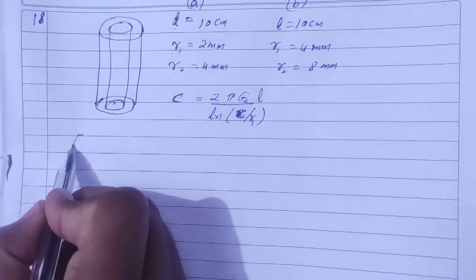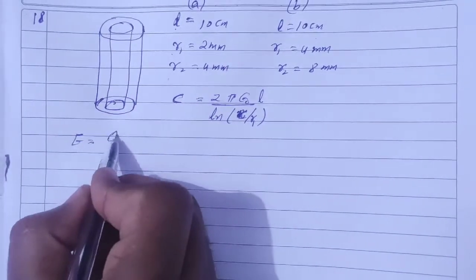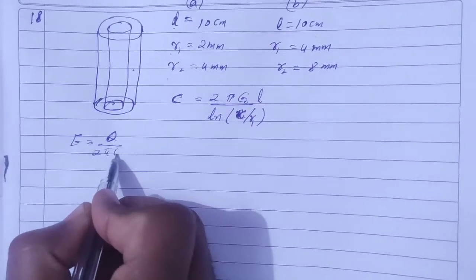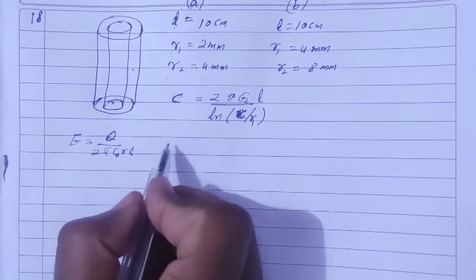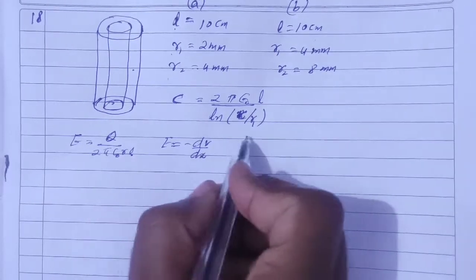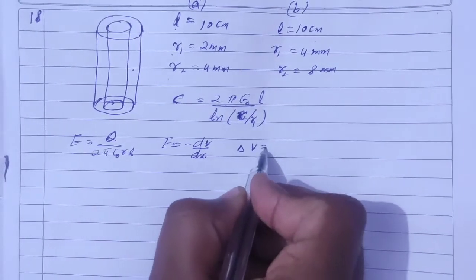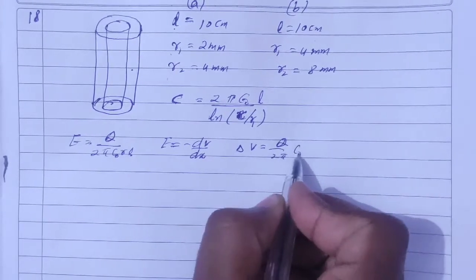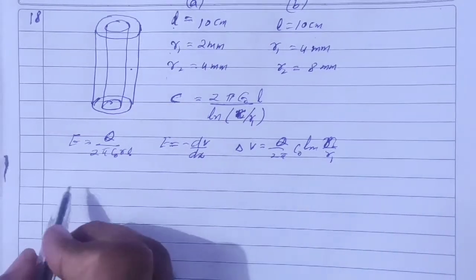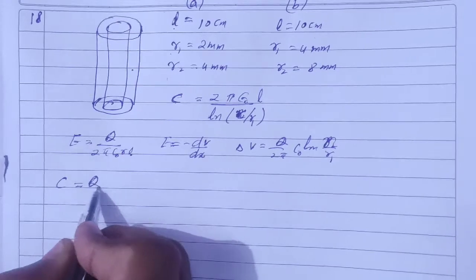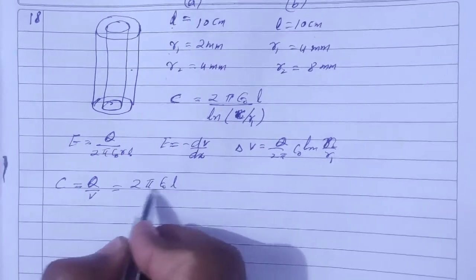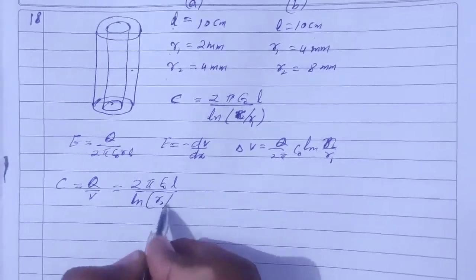To understand this formula, we first find the electric field using Gauss's law. The electric field between the cylinders is E = Q / (2π ε₀ r L). Then we use E = −dV/dx to find the potential difference: V = Q / (2π ε₀) × ln(R2/R1). Then applying C = Q/V gives us C = 2π ε₀ L / ln(R2/R1).